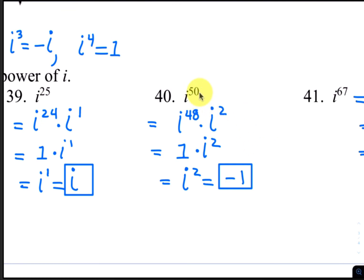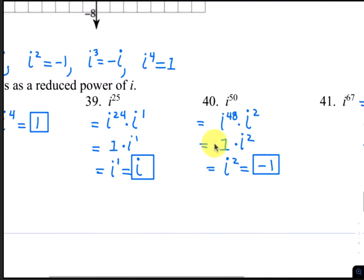For number 40, 50 is not a multiple of 4, but the closest multiple of 4 less than 50 is 48. So i to the 50th can be written as i to the 48th times i to the second, because 48 plus 2 is 50. Since 48 is a multiple of 4, i to the 48th is just 1. So that's 1 times i to the second, which is i squared, and looking at our cycle, i to the second gives us negative 1.